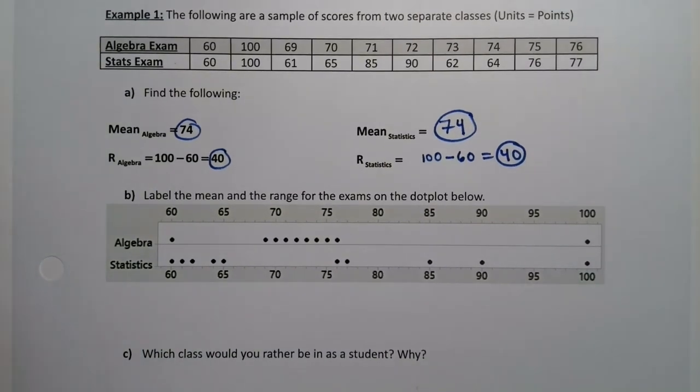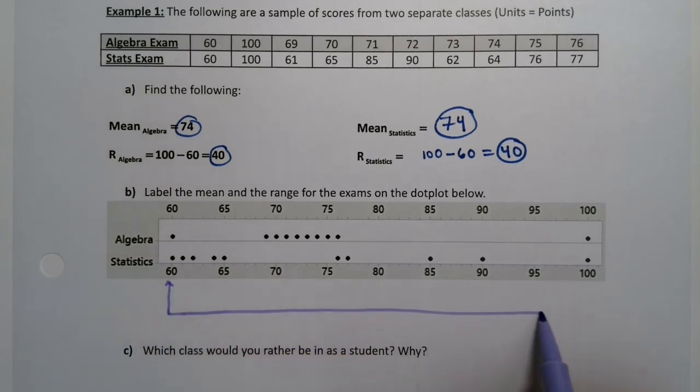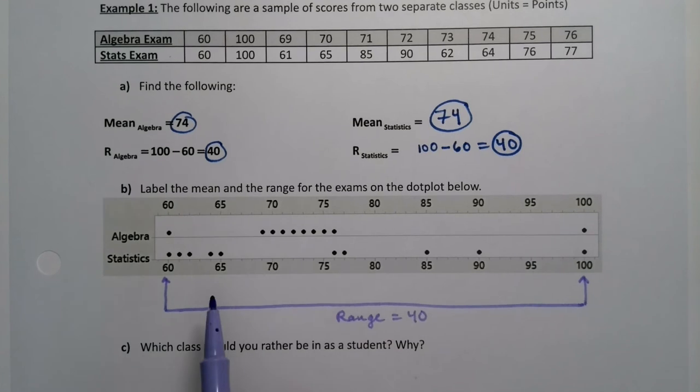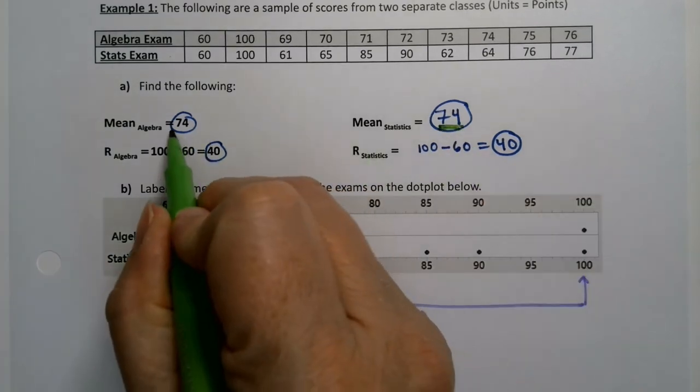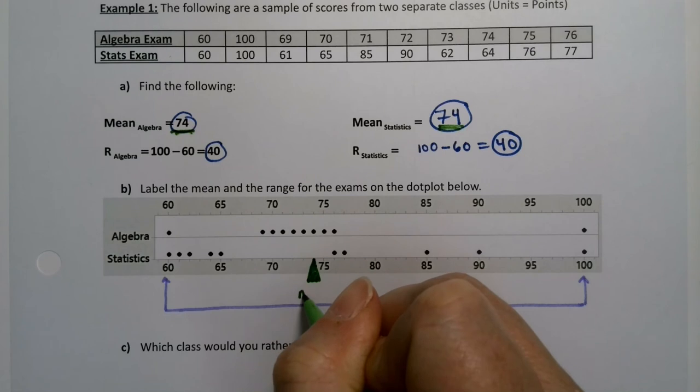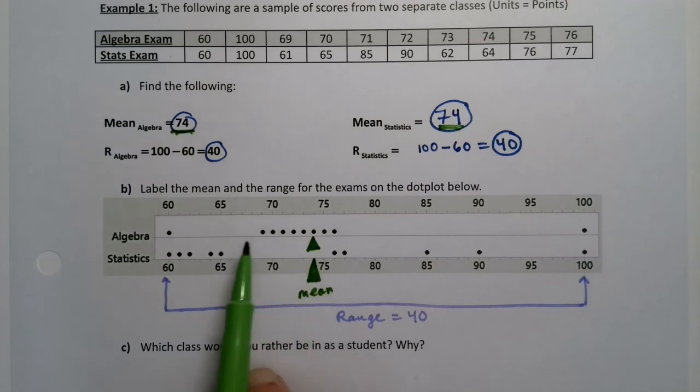So let's label them on this data set below. So the range is the distance from the lowest data point all the way up to the highest data point. That's the range. So there's a distance of 40 there. The mean is the balance point. The mean was at 74, which is right here. So that's where you would put your fulcrum or your teeter totter, right? So the center of your teeter totter in order to get those two sides to balance. That's the mean for both of these data sets.